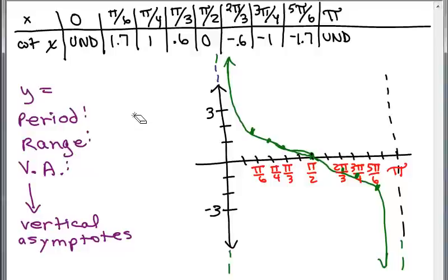So we're graphing y equals the cotangent of x and the period is pi. The range, all real numbers because it goes all the way down forever and all the way up forever. Remember these asymptotes are guidelines.